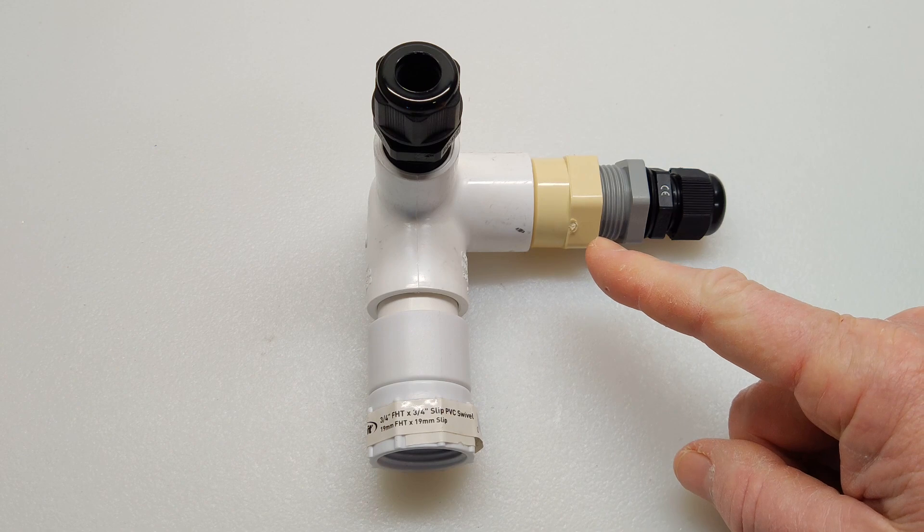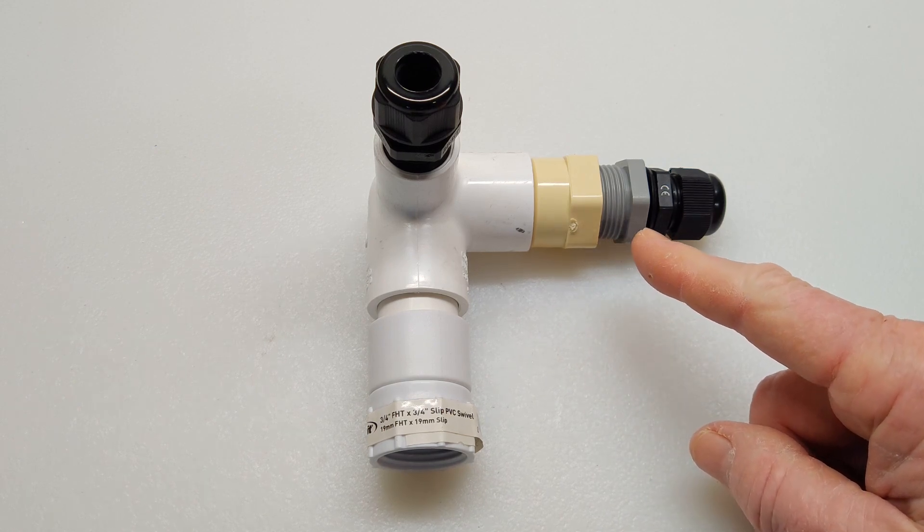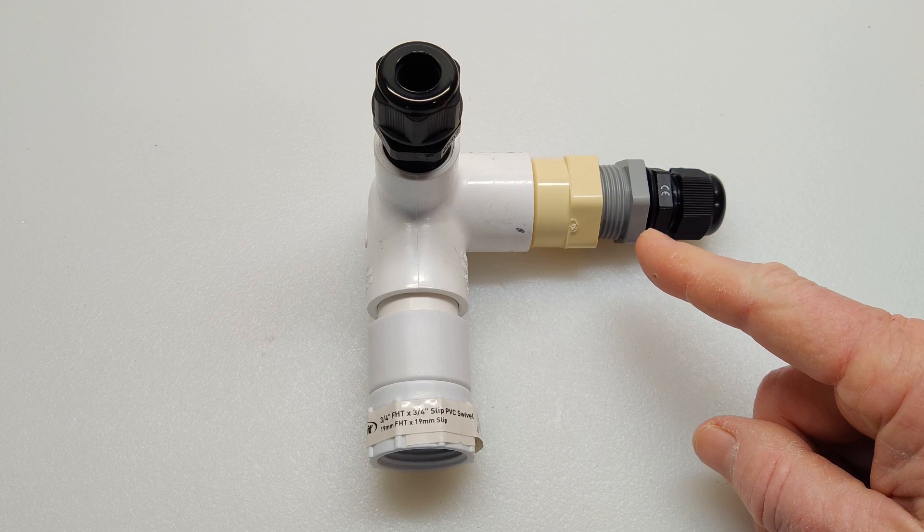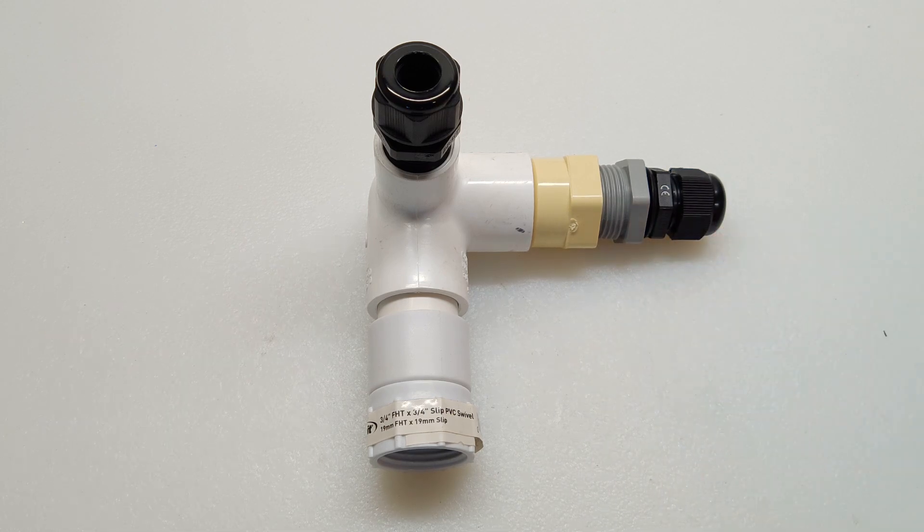Over here is the ¾ slip-in with the ¾ female thread, and this is the ¾ to ½ reducer, and that's another ½ inch gland nut.